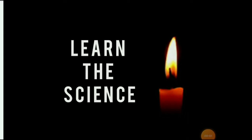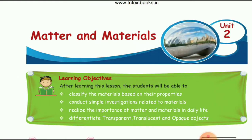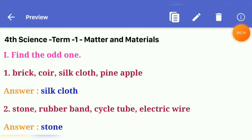Hi students, welcome to our channel. Today we will learn fourth standard term first science unit two: matter and materials lesson. Look back, answer the following. First roman, find the odd one. First one: brick, silk, lock, pineapple. Which answer is correct? Answer: silk lock.